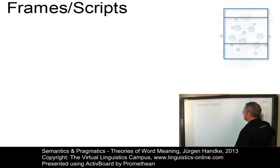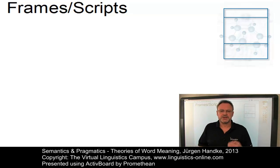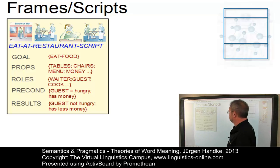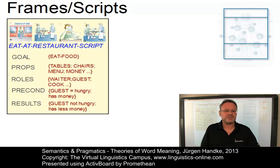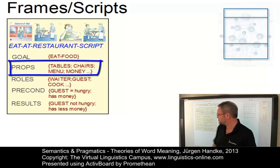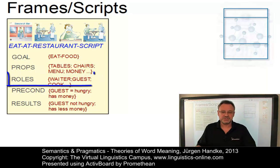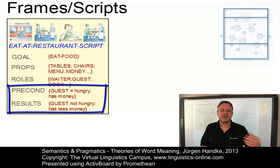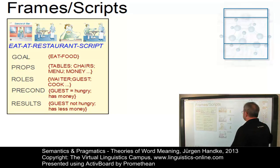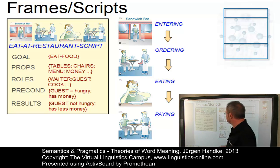An extended form of the frame is referred to as a script. Scripts encode stereotyped event sequences representing activities like buying a car, opening a bank account, or eating in a restaurant. The script that describes such an activity is essentially an event frame that specifies a number of defaults: a goal — for example, that you want to eat something; the objects that are part of the script, the so-called properties: tables, chairs, menu, money; the persons involved, the roles; and some preconditions as well as expected results. Like in a script of a movie, each script consists of a number of scenes. In our restaurant script, these scenes are entering, ordering, eating, and paying in this particular sequence.